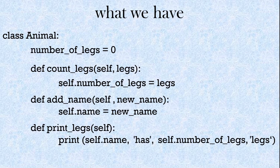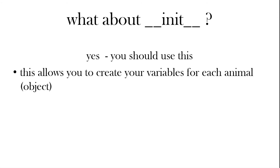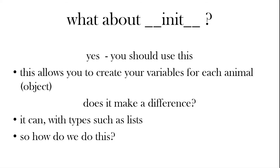Part four: the best way. We've got our animal class, a variable, and three methods. You may have seen this before: __init__ — that's called a constructor. What it does is create variables for each animal, rather than creating the variable for all animals. It creates the variable for each individual animal object, and that makes a difference.